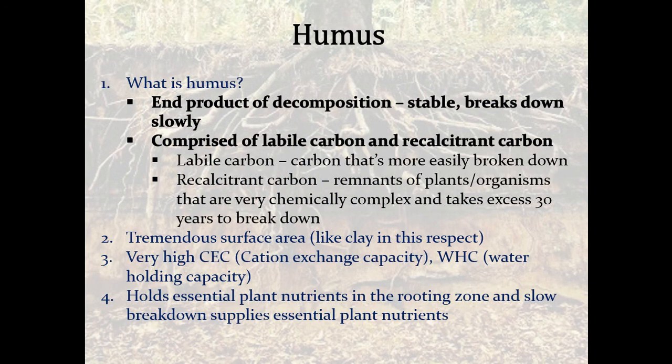Humus — so what is humus? It's the end product of decomposition. When we talk about organic matter, humus is our recalcitrant carbon. It's very stable and breaks down slowly. It comprises somewhat labile carbon but is more recalcitrant when we get to the state of humus. Labile carbon is more easily broken down and often consumed in that three to five year range, and then the recalcitrant carbon takes much longer to break down.